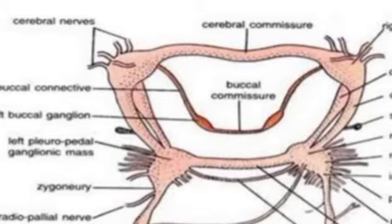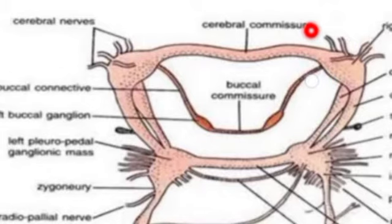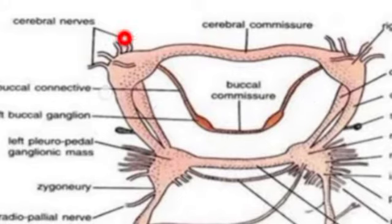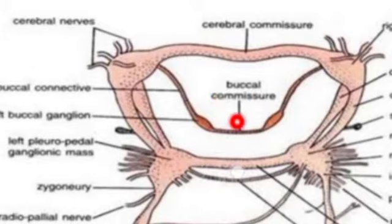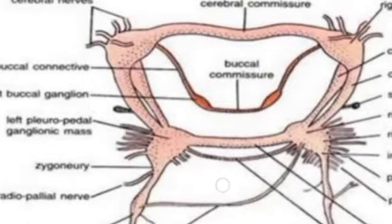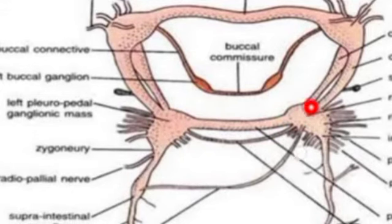These ganglia are connected by two types of nerves: commissures and connectives. There are three commissures in Pila. The first is the cerebral commissure, which connects the right and left cerebral ganglia to each other — since it connects the same type of ganglia it is called a commissure. The third one is the pedal commissure, which connects the two pleuropedal ganglia to each other.